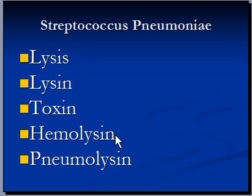Hemolysin is a toxin produced by some bacteria that damages red blood cells in order to release hemoglobin, mainly for nutritional purposes. The bacteria lives on hemoglobin and uses it as food.